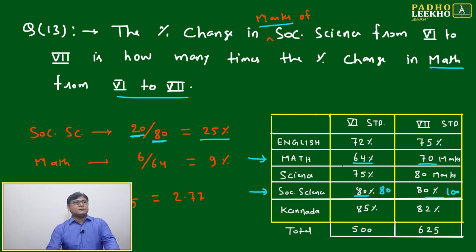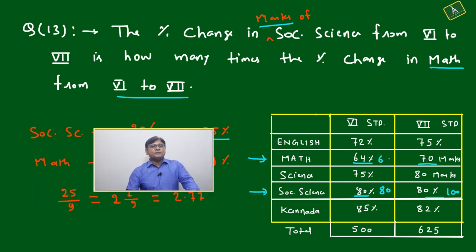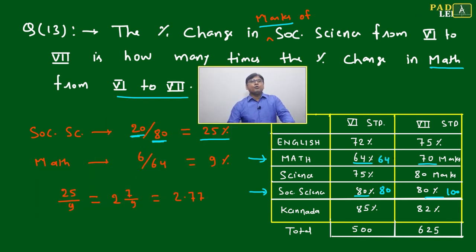Next is Math. Math is 64 percent, which equals 64 marks. This is 70 marks already given. Then it will be a change of 6 out of 64. 6 out of 64 will be around 1 by 11, which means approximately 9 percent.